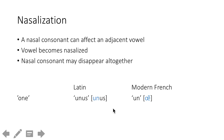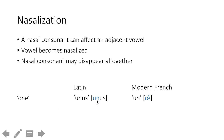Nasalization is when a nasal consonant affects an adjacent vowel. In Latin, you had the word 'unus' for 'one,' and that changed to 'un' in French. The second part dropped off, but also the vowel became nasalized and the N disappeared altogether.